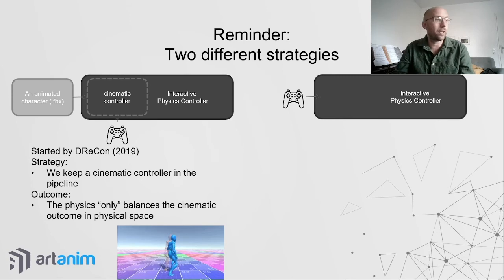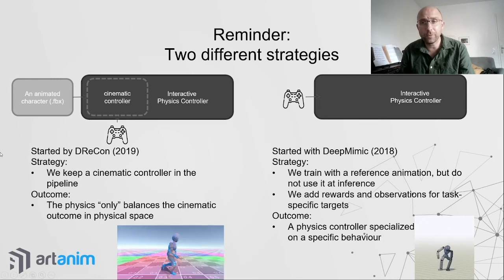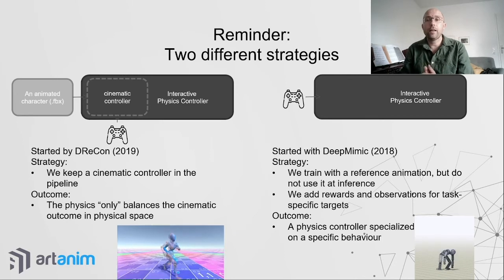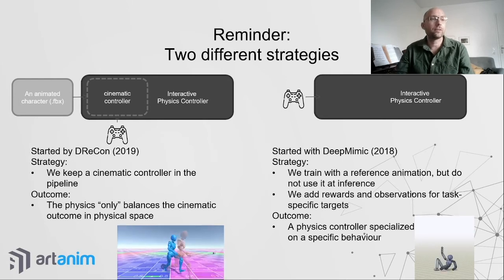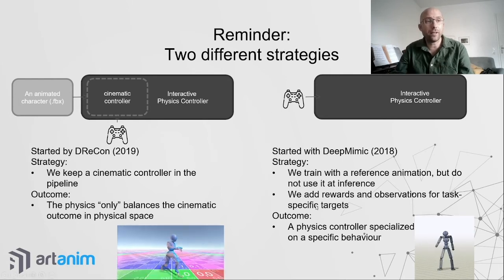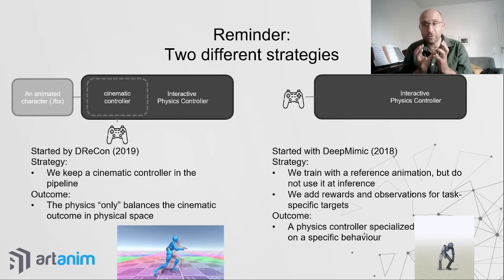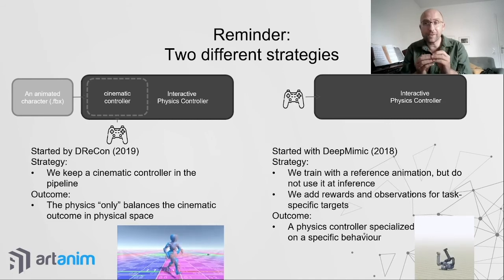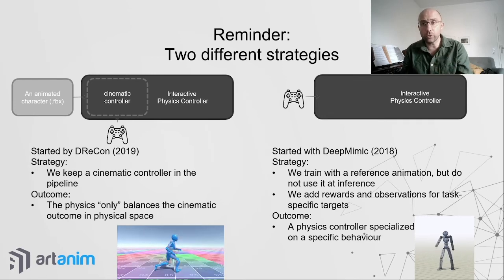In DReCon, the kinematic controller guides the physics character, which only needs to match the pose of the kinematic controller for any input. In the Deep Mimic approach, you train using a reference animation, but at inference time there is no kinematic controller — the physics-based controller is specialized in generating that movement. You can add extra rewards during training for matching positions, kicking objects, or other targets.